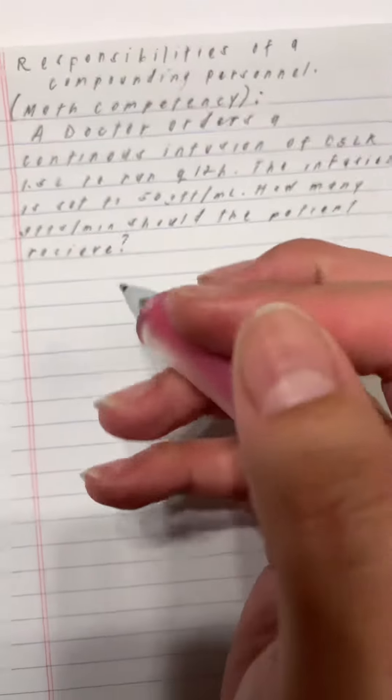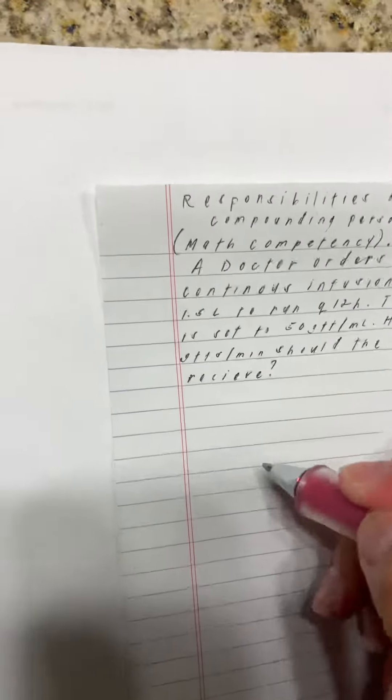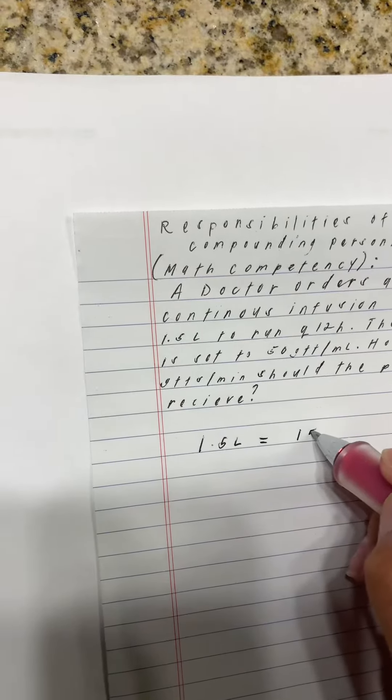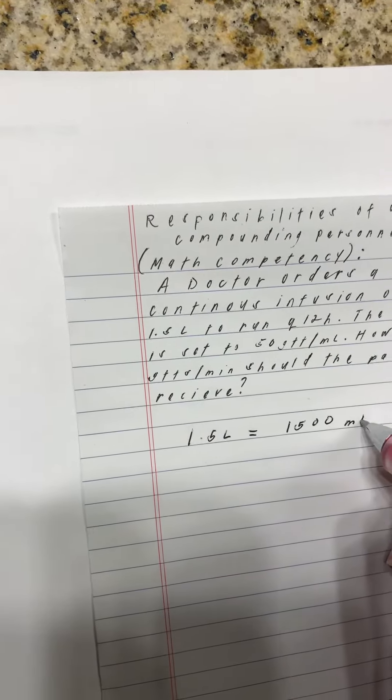we're going to start by converting the liters. 1.5 liters to milliliters, and you get 1500 milliliters.